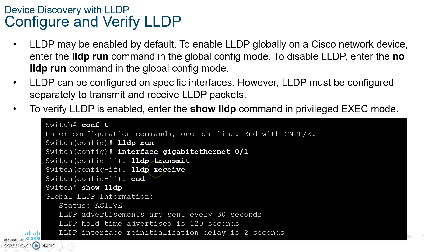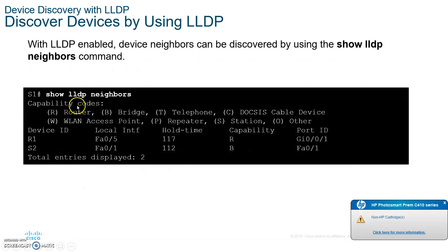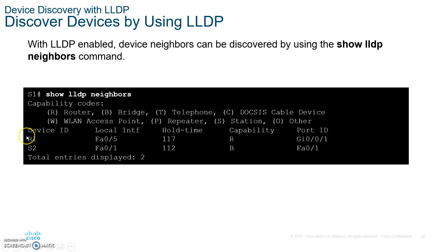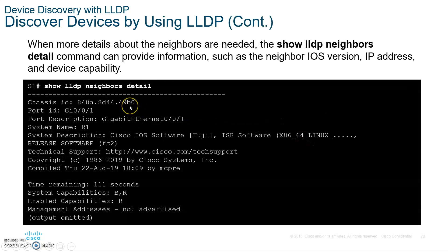Unlike CDP, which only runs on Cisco switches, LLDP runs on any vendor including Cisco. You can type 'show lldp neighbors' and it gives you the same type of information — your neighbor, your local interface, the neighbor's interface, and full details. You actually get even more information out of LLDP.